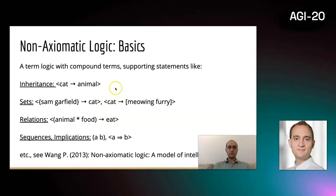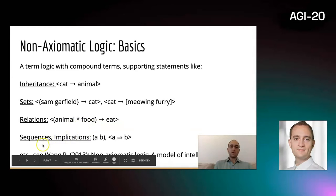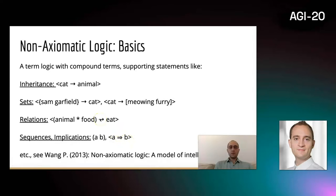The non-axiomatic logic is quite expressive. For instance, you can say that cat is an animal, or other statements with sets like that Simon and Garfield are cats, or that cats are meowing furry things. You can express relationships like that animals eat food. Also, temporal relationships can be described, like sequences A, B, or that A leads to B usually. More can be seen in Wang's book, Non-axiomatic Logic: A Model of Intelligent Reasoning.